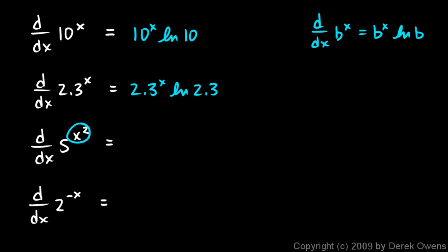The derivative of 5^(x²) requires the chain rule because we have a composite function. This gives 5^(x²) times the natural log of 5, times the derivative of the inner function x², which is 2x. So the answer is 5^(x²) · ln(5) · 2x — you could rearrange these three factors, but that's fine as written.